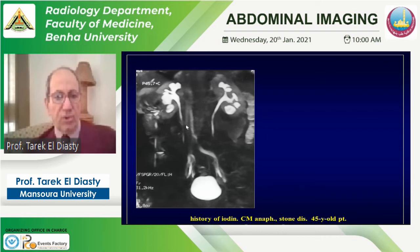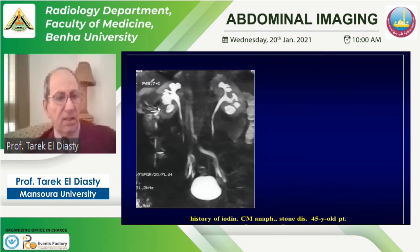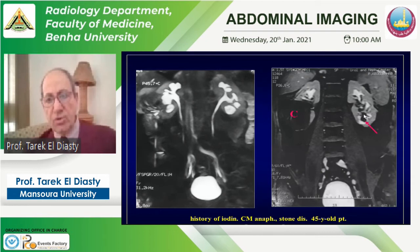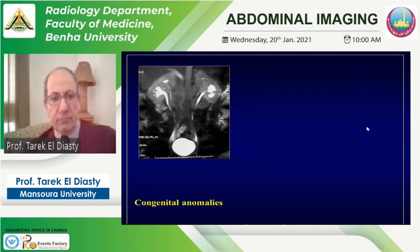An example of excretory MR urography: as with the static technique, we should not rely on the MIP image. Here the MIP shows only ill-definition of the outer margin of the right kidney. But reviewing source images reveals a large renal cyst — hypointense on T1-weighted images — and a large branching signal void stone in the left kidney.